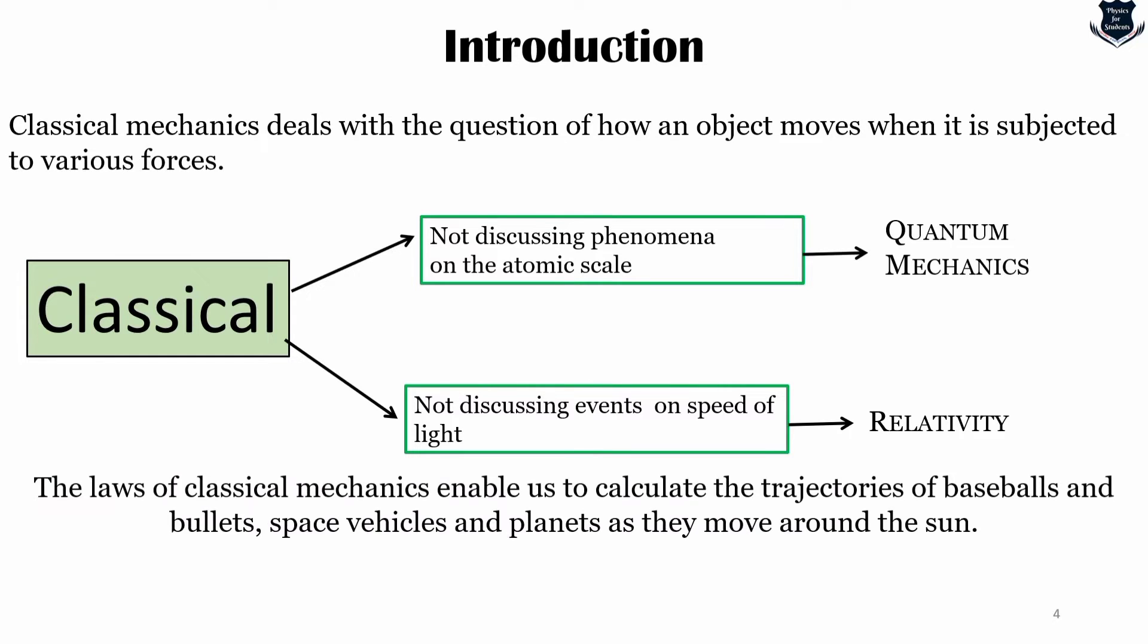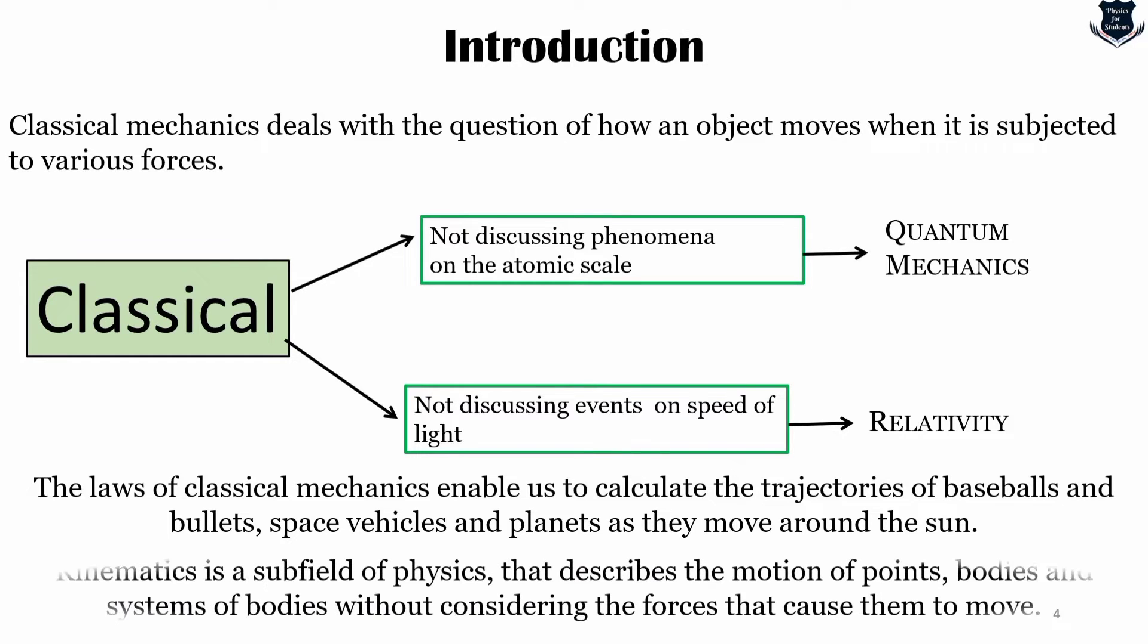The laws of classical mechanics enable us to calculate the trajectories of baseballs and bullets, spacecrafts, vehicles, and planets as they move around the sun. Using these laws, we can predict the position versus time relation for a cylinder rolling down an inclined plane or an oscillating pendulum, or we can calculate the tension in the wire when a picture is hanging on a wall.